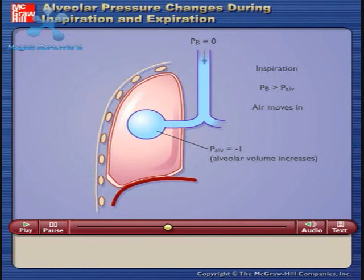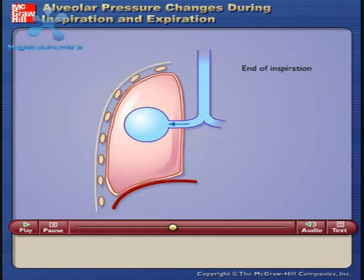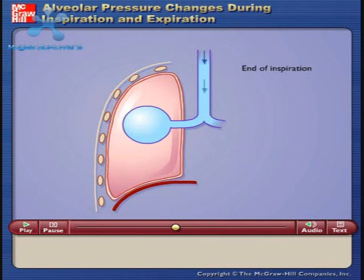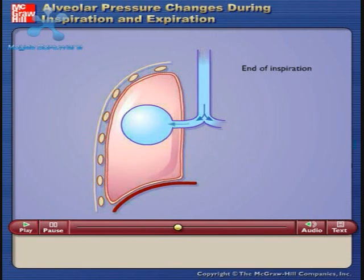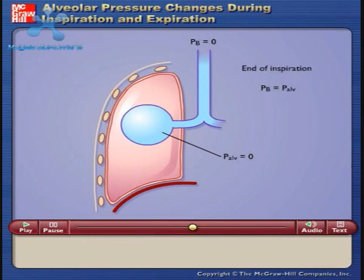At the end of inspiration, the thorax and alveoli stop expanding. Air flow into the lungs causes alveolar pressure to become equal to barometric air pressure. Because the pressures become equal, no more movement of air occurs.